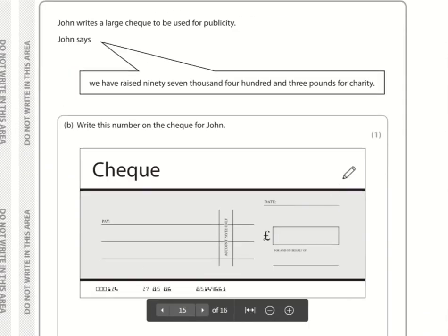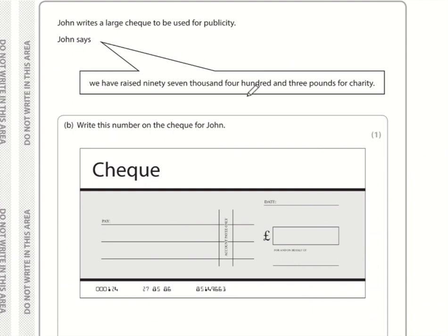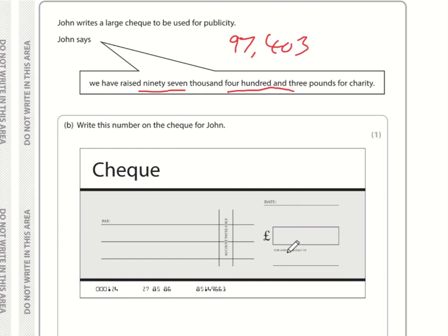Question twelve: write a number in digits. When writing numbers, use commas to represent thousands, millions, billions. So we write 97, then a comma, then 403 — giving 97,403. And we are done.